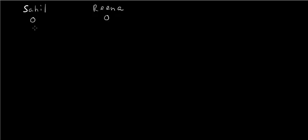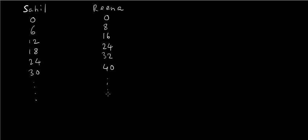Sahil and Rina both start from 0. Sahil counts in multiples of 6: 6, 12, 18, 24, 30, and so on. Rina counts in multiples of 8: 8, 16, 24, 32, 40, and so on. The question is what is the first number that both of them will say. Looking at the numbers, the first common number they will both say is 24. So the answer is 24.